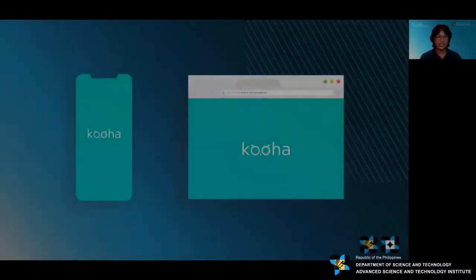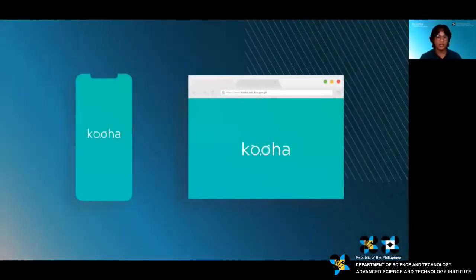Kuha is accessible mainly via the mobile application for Android devices, and also to the web. Major features are available in the Kuha mobile app, while the web app serves as an information system that allows the user to navigate through all the data collected using the mobile app.